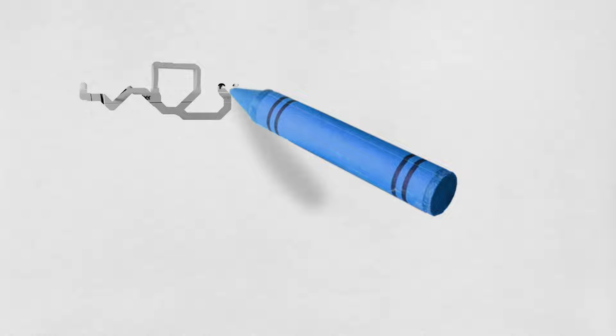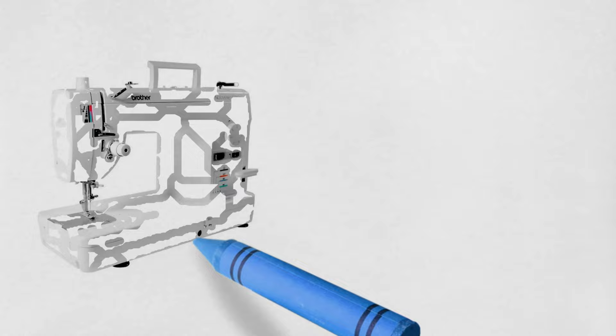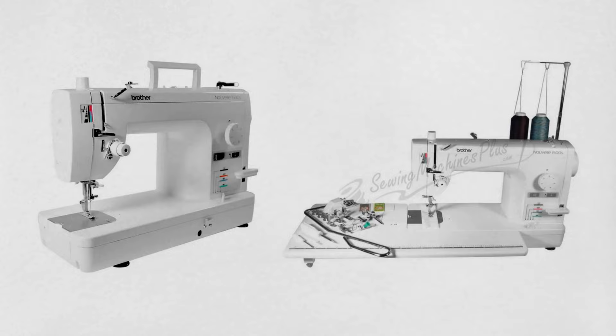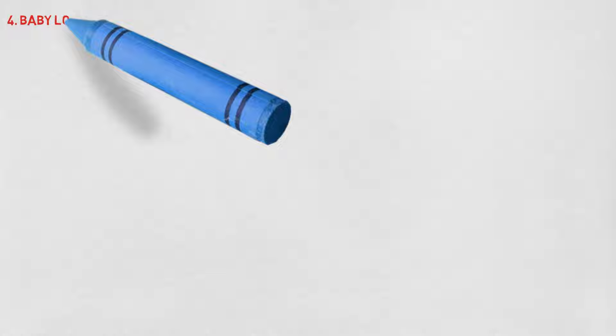The PQ1500SL incorporates a knee lifter and bed extension table for quilting, a full-range foot pressure adjustment, four feed dog settings for optimal fabric control, and an adjustable pin feed system. The fast needle threader comes with an automatic thread cutter, which is a time-saving convenience.